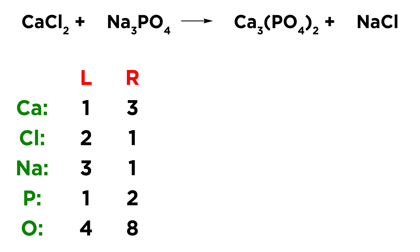That's the number of atoms of each element on each side, and now all of those need to be balanced. Let's start with calcium. All we need is a coefficient to the left of some substance to balance that element. For calcium we have one on the left and three on the right, so we put a three here. Now we have three CaCl2 units, giving us three calcium atoms on the left, so calcium is balanced — three on the left and three on the right.